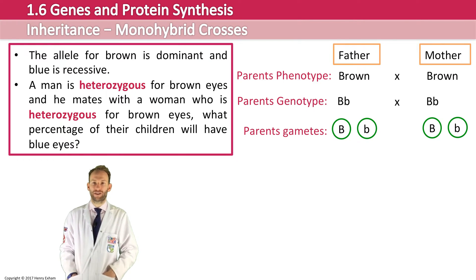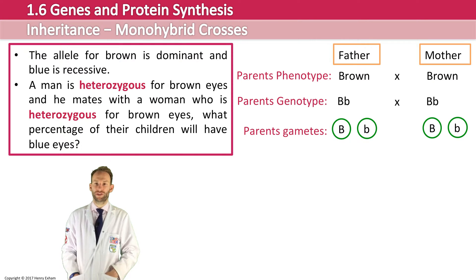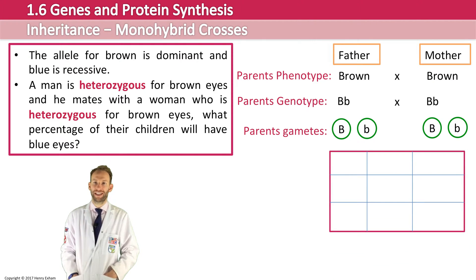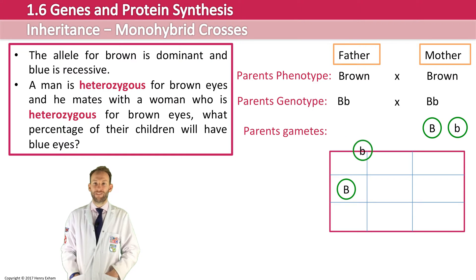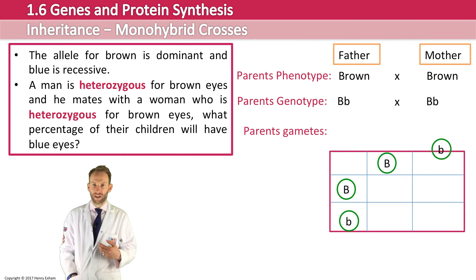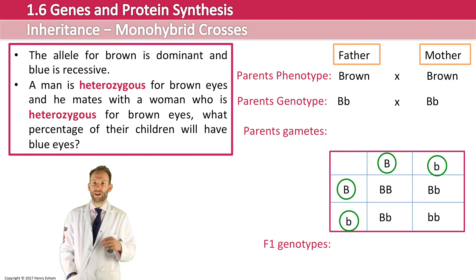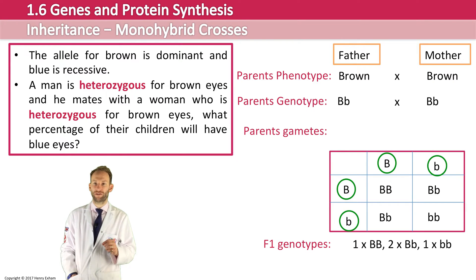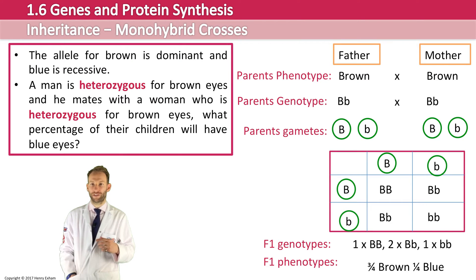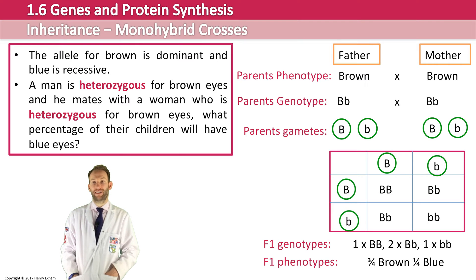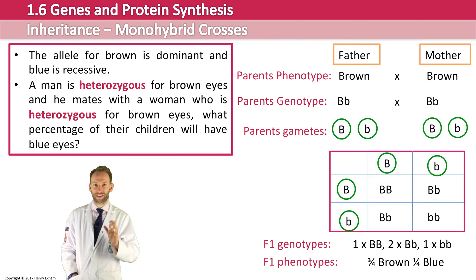We put the gametes into a Punnett square, with the father's on one side and the mother's on the other, then match them up to show the offspring. The F1 genotypes — the first generation — are: one big B big B, two big B little b, and one little b little b. Their phenotypes are three-quarters brown and one-quarter blue, since little b little b is homozygous recessive. That is a standard monohybrid cross — this should be revision.